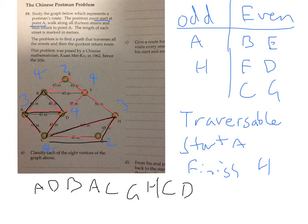So starting at A: A, D, B, A, C, G, H... then continuing through C, D, F, and finishing at H. I'll have to write it down. The path visits all edges, starting at A and ending at H.